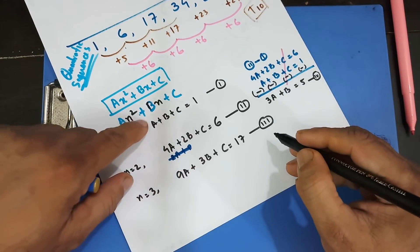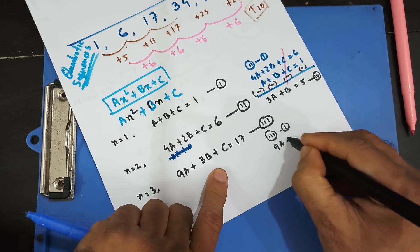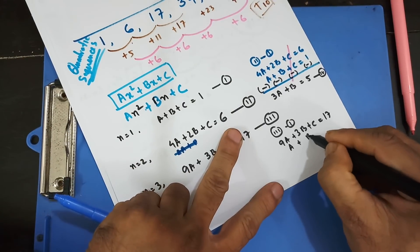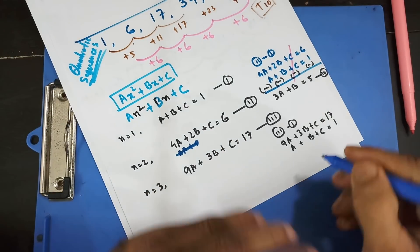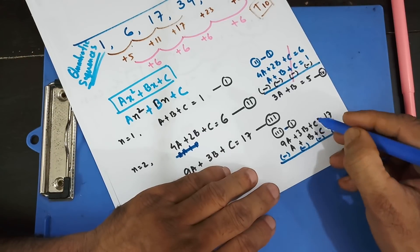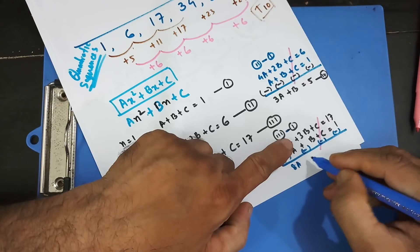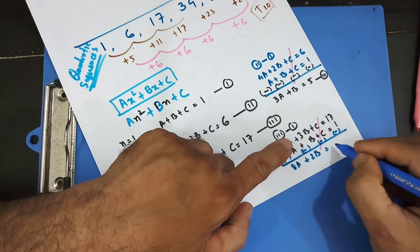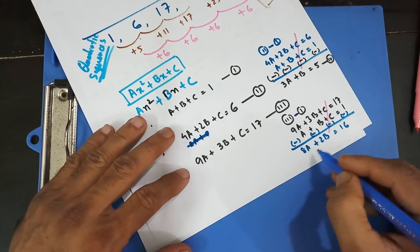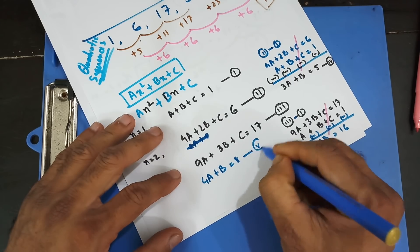Now I subtract equation 1 from equation 3. We have 9a + 3b + c = 17, minus a + b + c = 1. The c terms cancel: 9a − a = 8a, 3b − b = 2b, and 17 − 1 = 16. So 8a + 2b = 16. I can take 2 as a common factor to simplify: 4a + b = 8. That's equation 5.